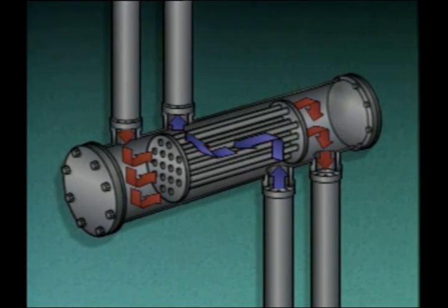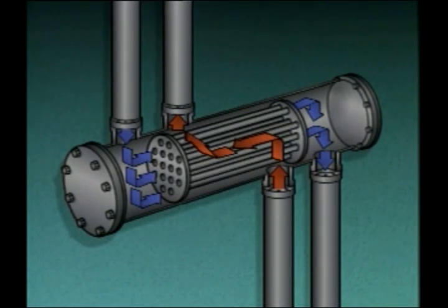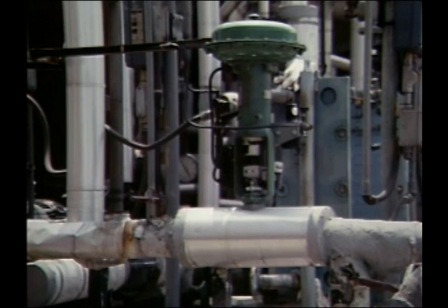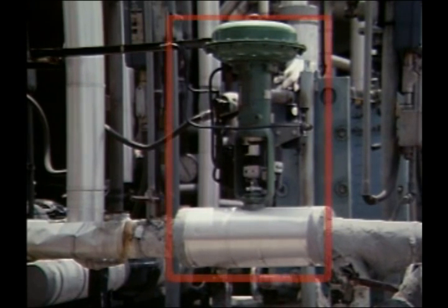In some heat exchangers, the fluids flow in opposite directions — the cooler fluid flows through the tubes and the hotter fluid flows around the tubes. The rate of heat transfer is generally controlled by adjusting the flow rates of one or both fluids, which is usually accomplished by adjusting flow control valves.